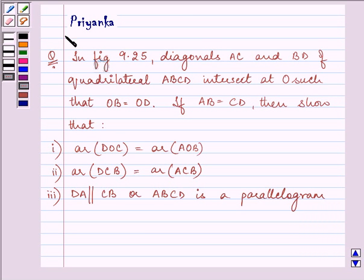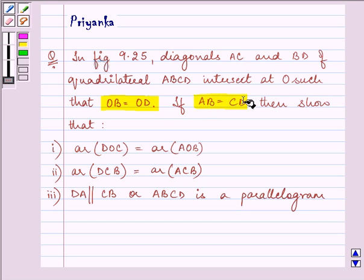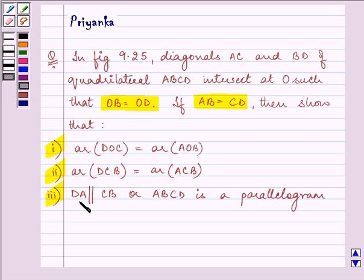Hi, how are you all today? My name is Priyanka and the question says: In figure 9.25, diagonals AC and BD of a quadrilateral intersect at O, such that OB is equal to OD. If AB is equal to CD, show that: area of DOC is equal to area of AOB; area of DCB is equal to area of ACB; and thirdly, DA is parallel to CB, or ABCD is a parallelogram.